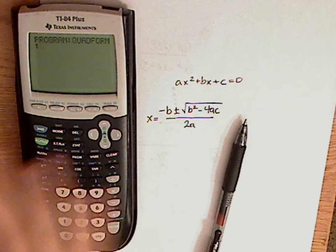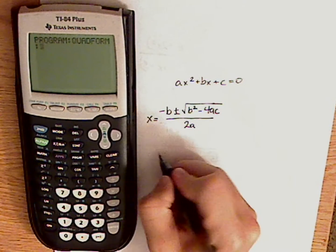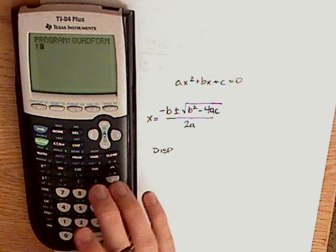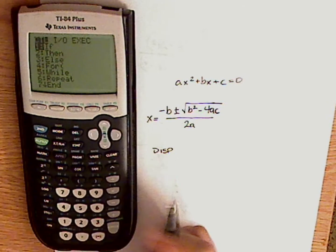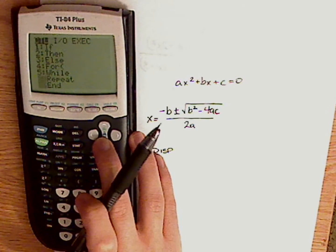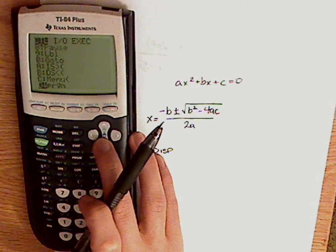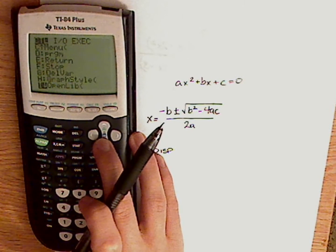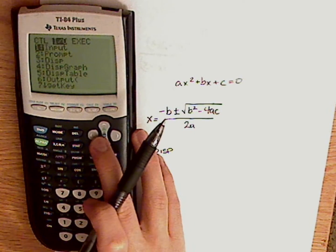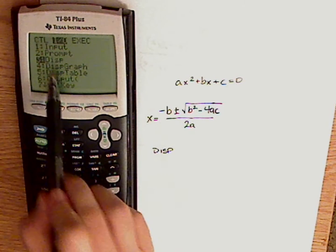Now what I want to do is I want to use the display option. The display option, once you're in program, hit program again, and then you have all these operations. While, end, pause, label, go to, menu. Oh, there it is. It's under I-O. Okay, there's the display option.